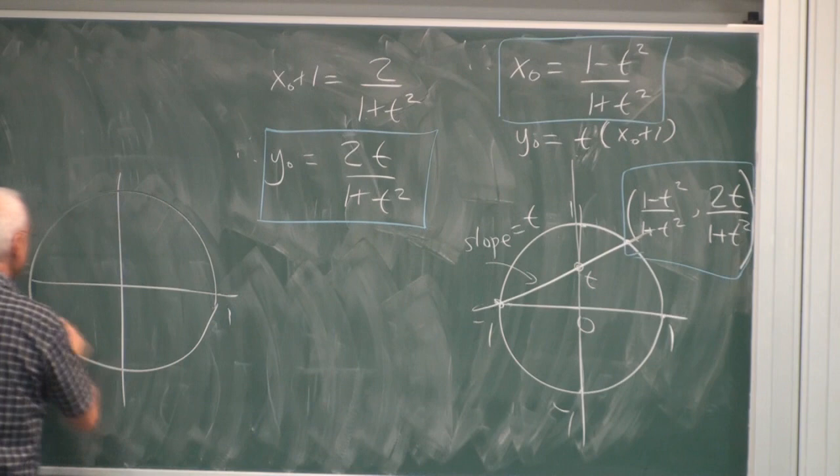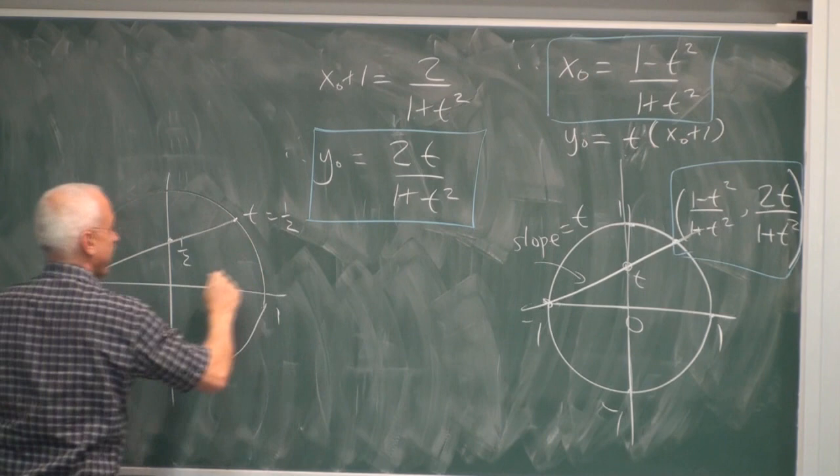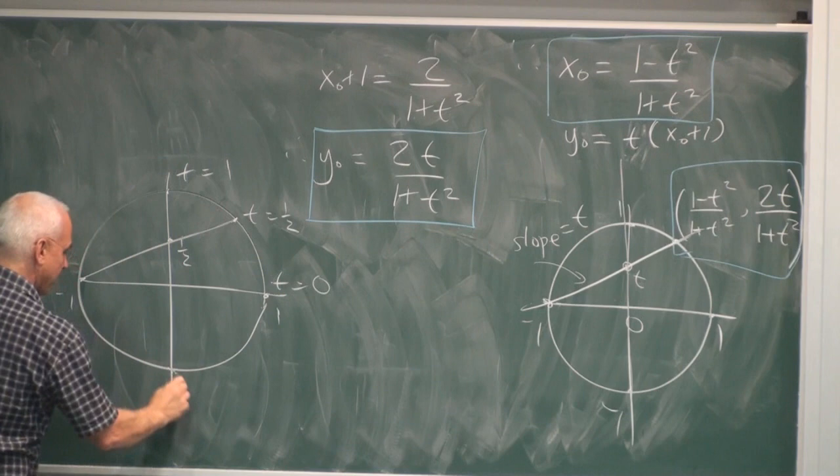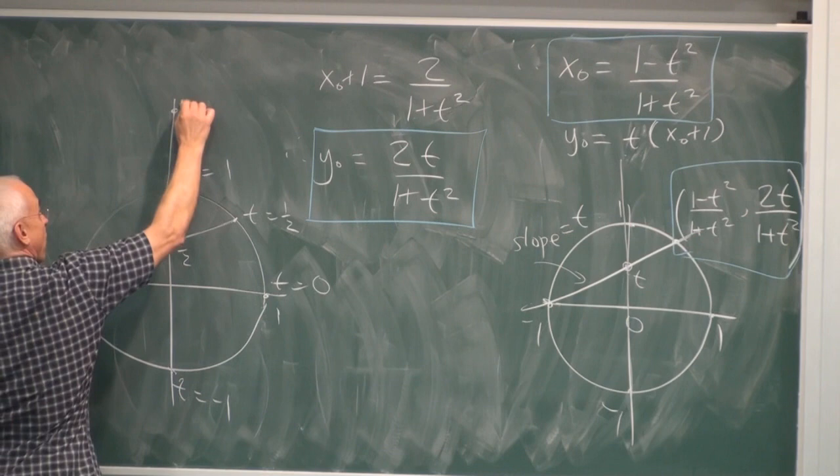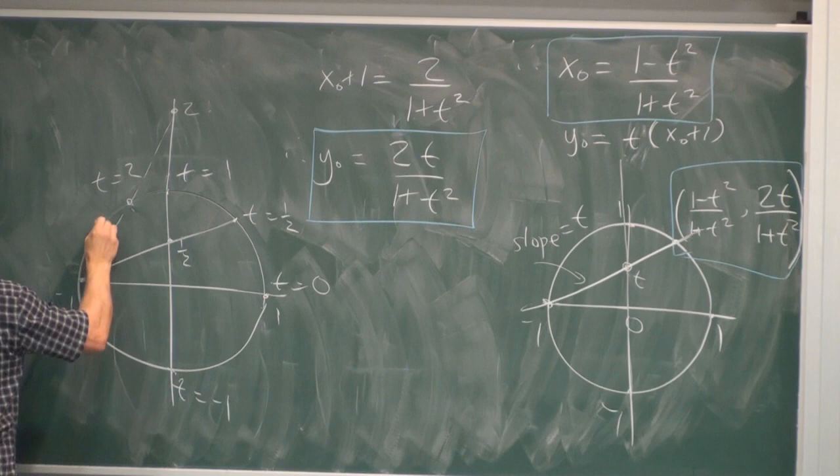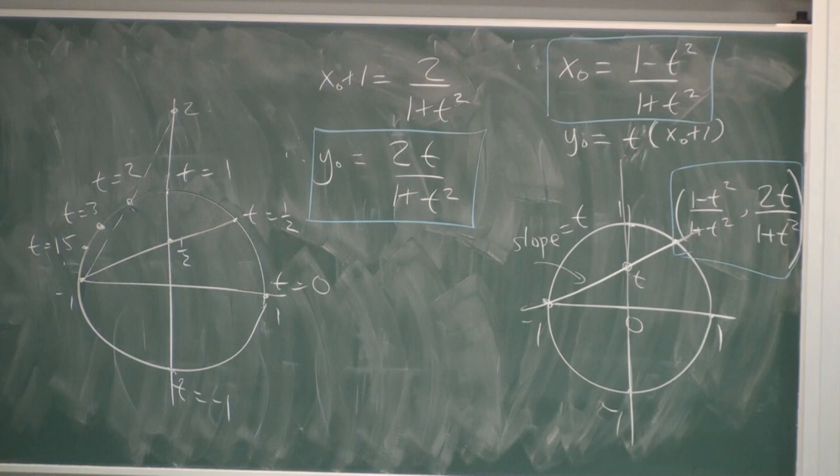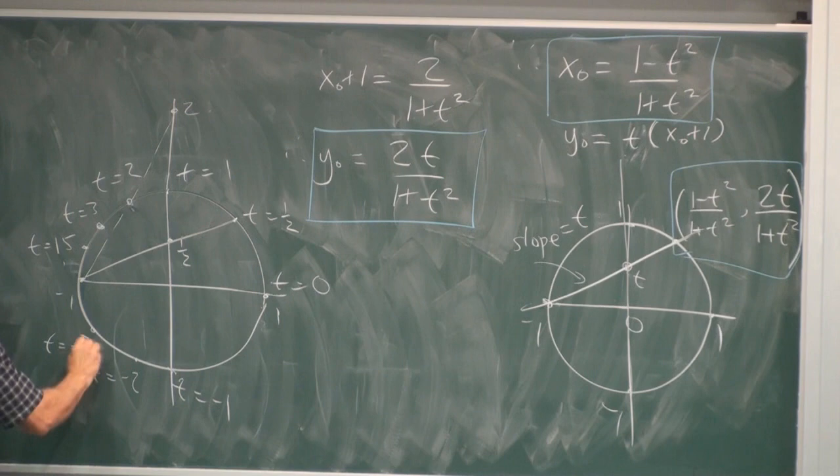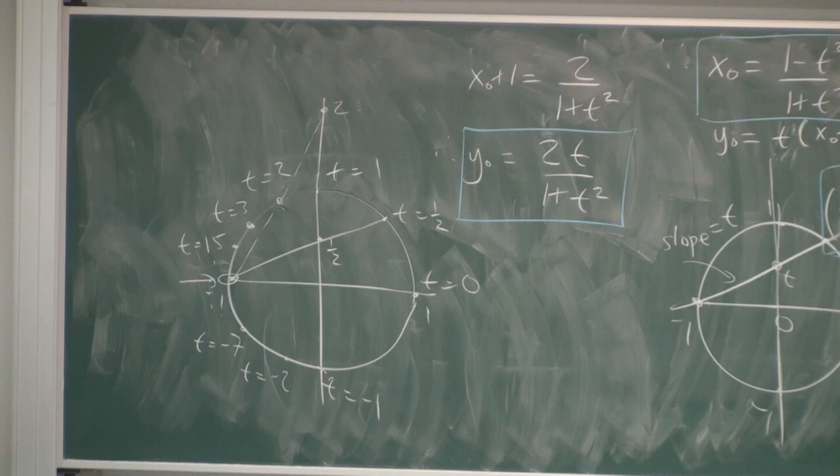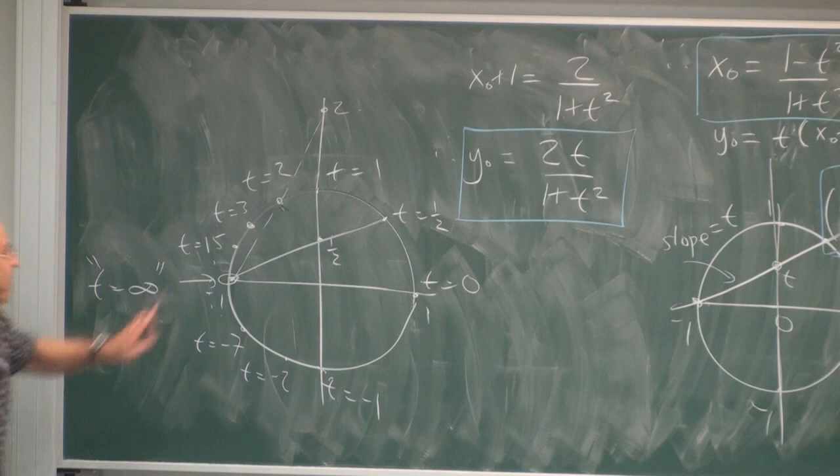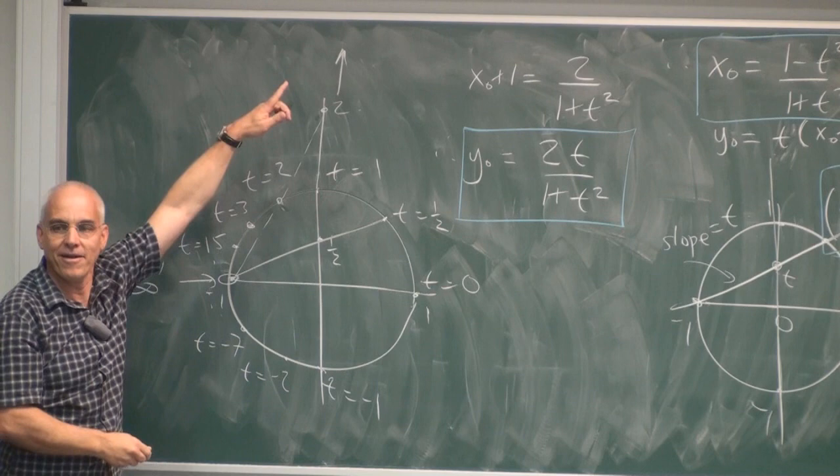So the parameterization is this. So if you have t equals 1 half, then that would be the place where t equals 1 half. This would be t equals 1. This would be t equals 0. This would be t equals minus 1. t equals 2. How would you find t equals 2? You'd go up here to 2, draw a line. That's t equals 2. That would be t equals 3. t equals 15 or whatever. Here, t equals minus 2. t equals minus 7 and so on. This point is a little bit abnormal. It's sort of t equals infinity. That's when our point is infinitely far up there so that the line becomes really a tangent.